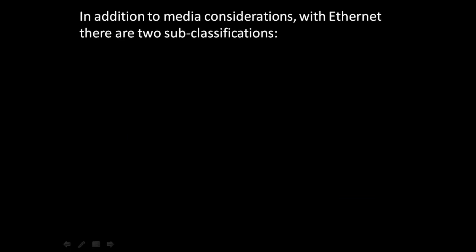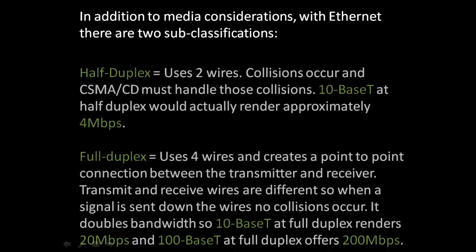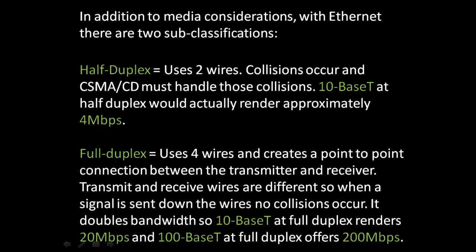In addition to media considerations, with Ethernet there are two subclassifications. The first is half-duplex, which uses two wires. Collisions occur and CSMA-CD must handle those collisions. 10BaseT at half-duplex would actually render approximately 4 megabits per second.